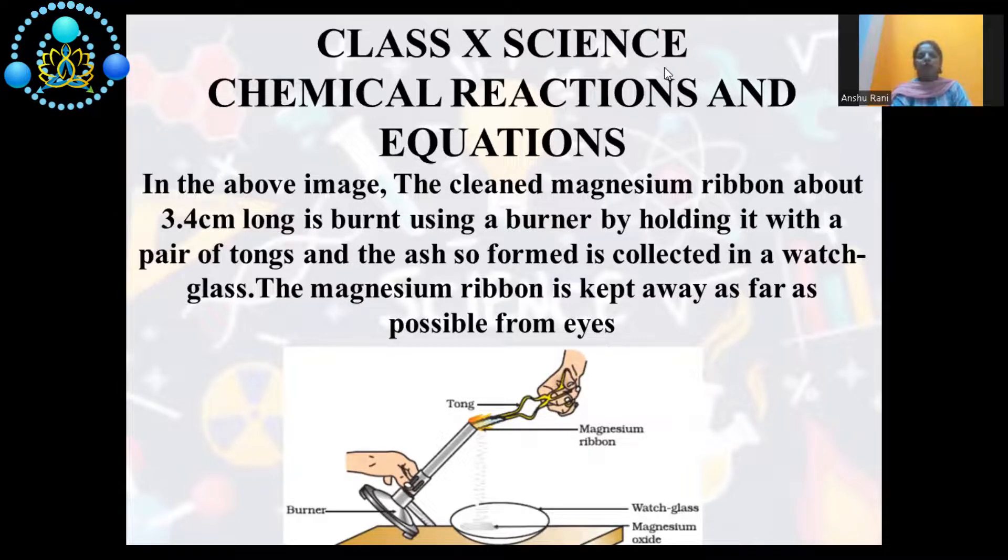First of all, I will read a paragraph. In the given image, the cleaned magnesium ribbon, about 3.4 cm long, is burned by using a burner by holding it with a pair of tongs and the ash so formed is collected in a watch glass. The magnesium ribbon is kept as far away from your eyes as possible, and we have to give answers of certain questions on the basis of this paragraph.